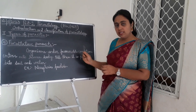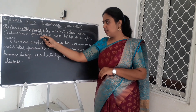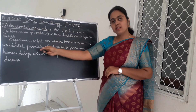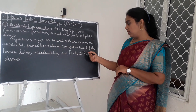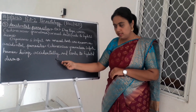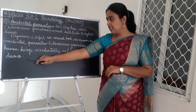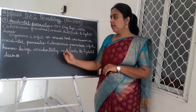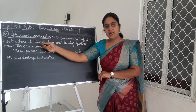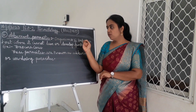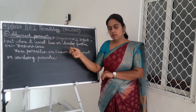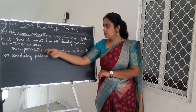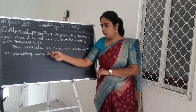Accidental parasites: organisms which infect an unusual host are known as accidental parasites. Echinococcus granulosus infects human beings accidentally and leads to hydatid disease. Echinococcus granulosus is also called dog tapeworm — it accidentally infects human beings. Aberrant parasites: these parasites infect a host where they cannot live or develop further. Example is Toxocara species. These parasites are known as aberrant or wandering parasites.